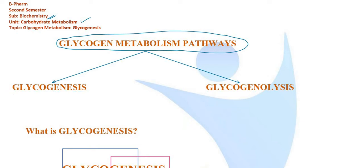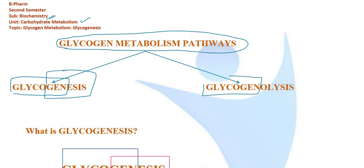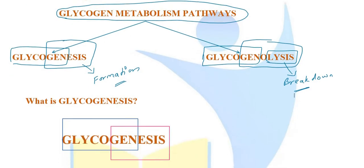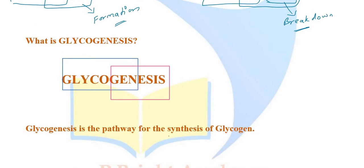In glycogen metabolism, there are two key processes: glycogenesis and glycogenolysis. Glycogenesis is glycogen formation — the pathway involved in the synthesis of glycogen. Glycogenolysis is glycogen breakdown.